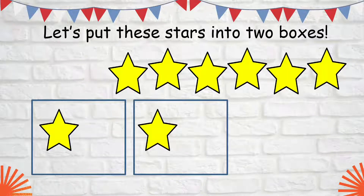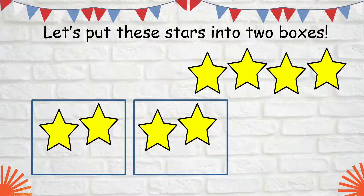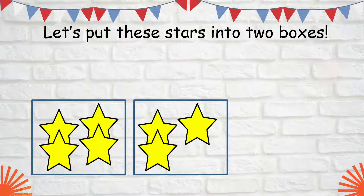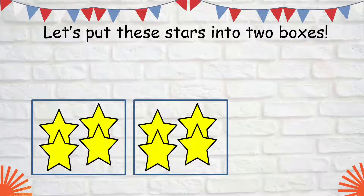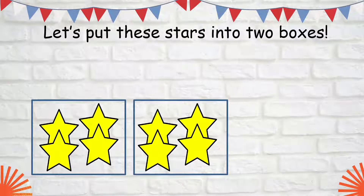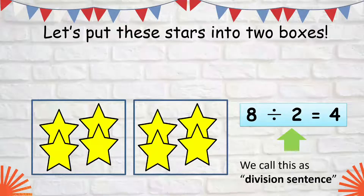Each box has 1 star now. Let's distribute until no more stars on top. So how many stars does each box have? Each box has 4 stars. So when we divide 8 by 2, the answer is 4. That is what we call our division sentence.